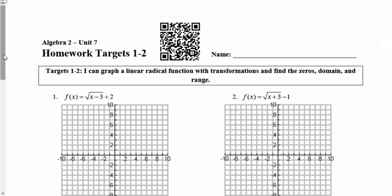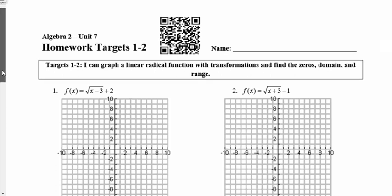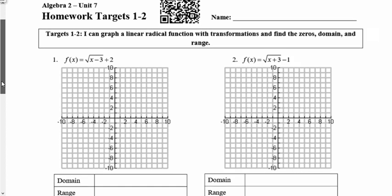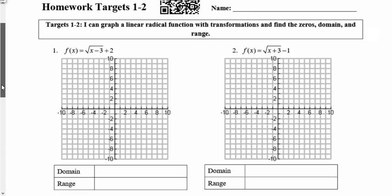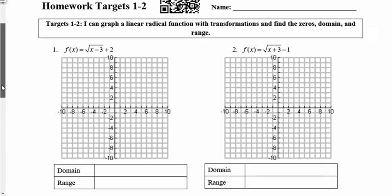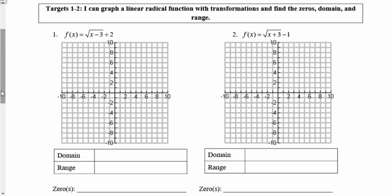This is your Targets 1 and 2 homework assignment. We're graphing radical functions, focusing on the square root functions, or functions to the 1/2 power. We went over what the parent function looks like in the notes. If you don't recall, go back and watch that video. I'll copy down the parent table here so we can work with that.